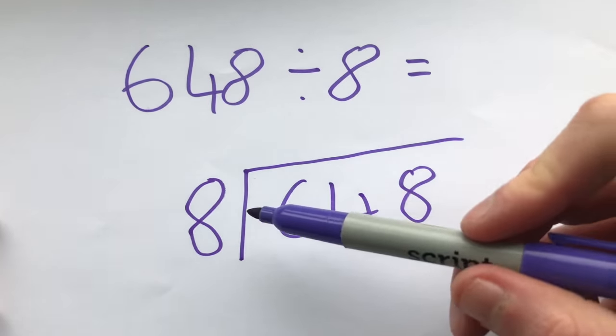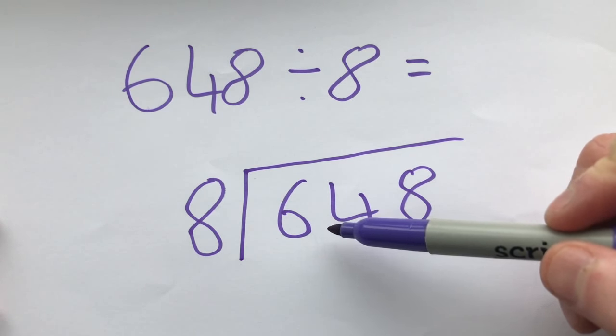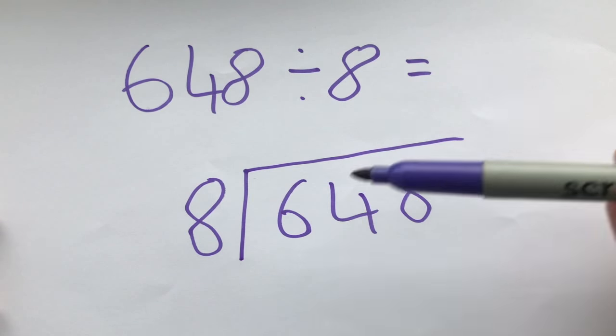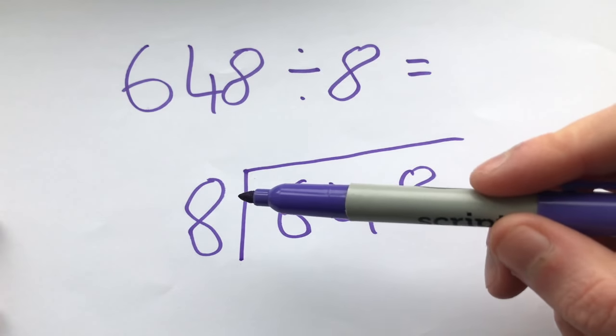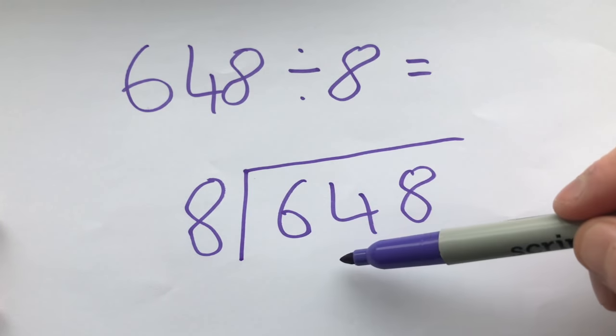So again this time we go across and we say, how many eights go into six? Well this time the answer is zero because eight can't fit into six. So what we do in this case is we look again and say, how many eights go into, and we look across this number here. So this is now our number, 64.